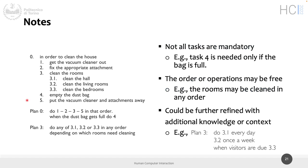You can also refine the plan further by adding knowledge not included in the task hierarchy — not only about mandatory or optional steps, or about order, but additional context. For example: 3.1 clean the hall needs to be done every day, 3.2 once a week, and 3.3 only when visitors are due. These steps emerge from observation, interviews, or other sources that tell you how people do this task in that context with those conditions.